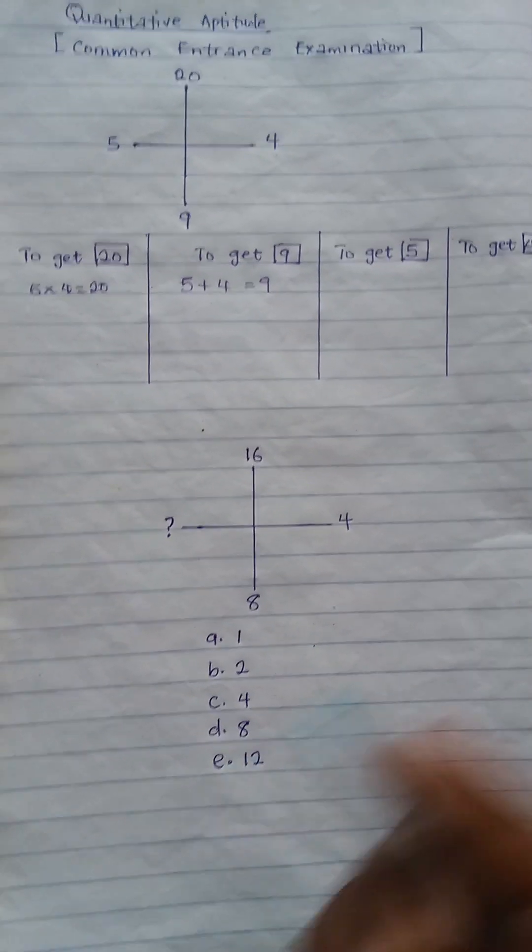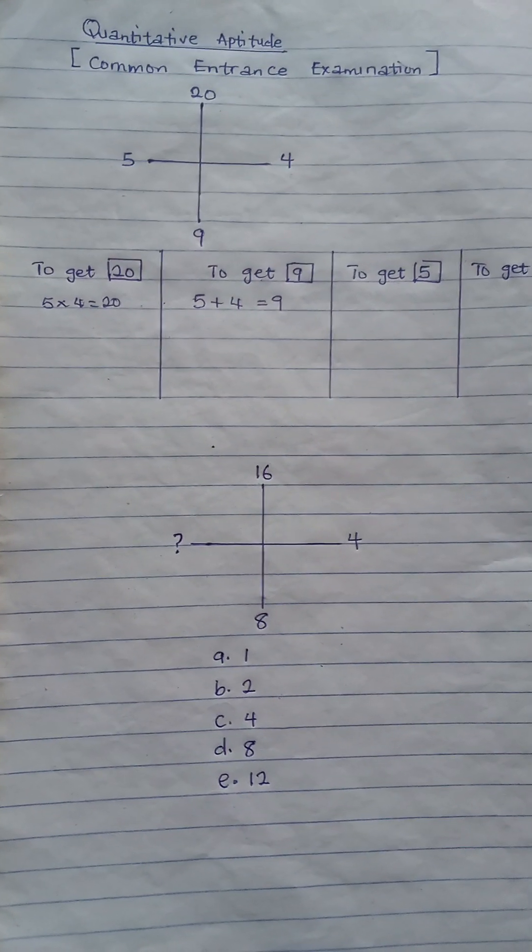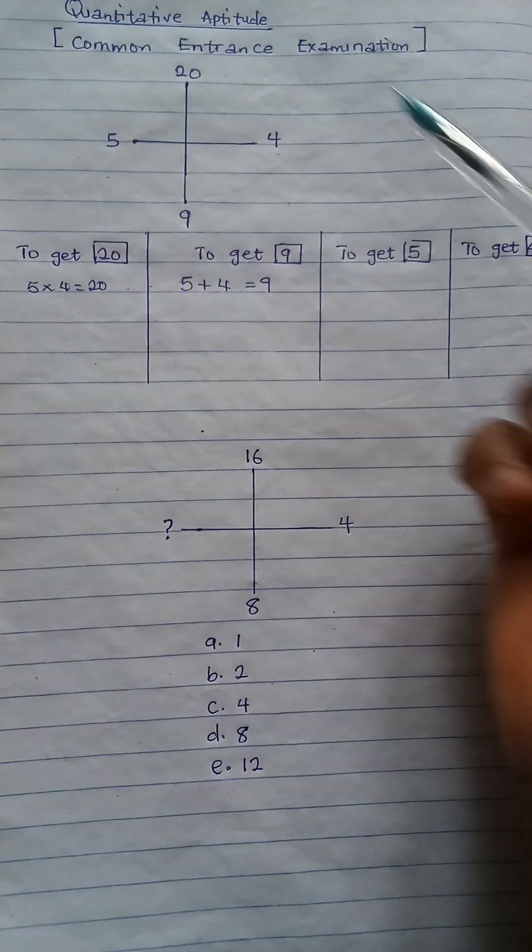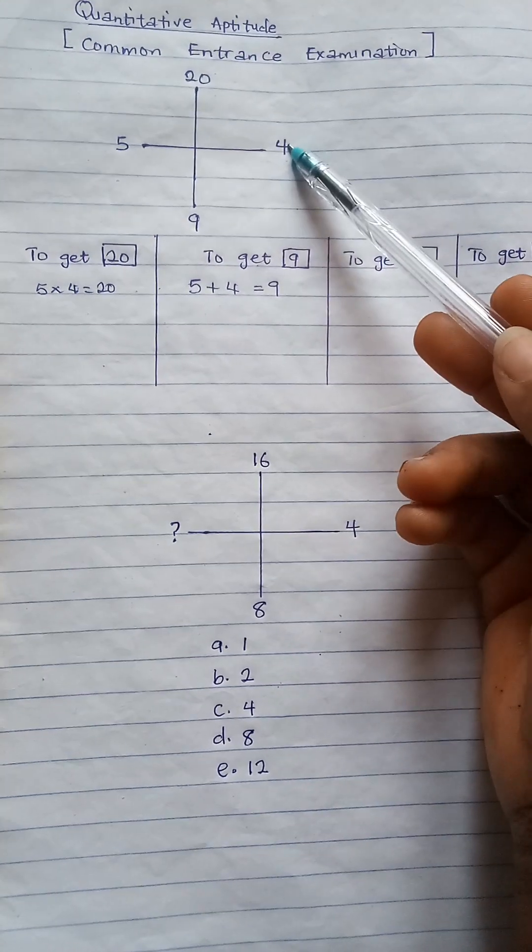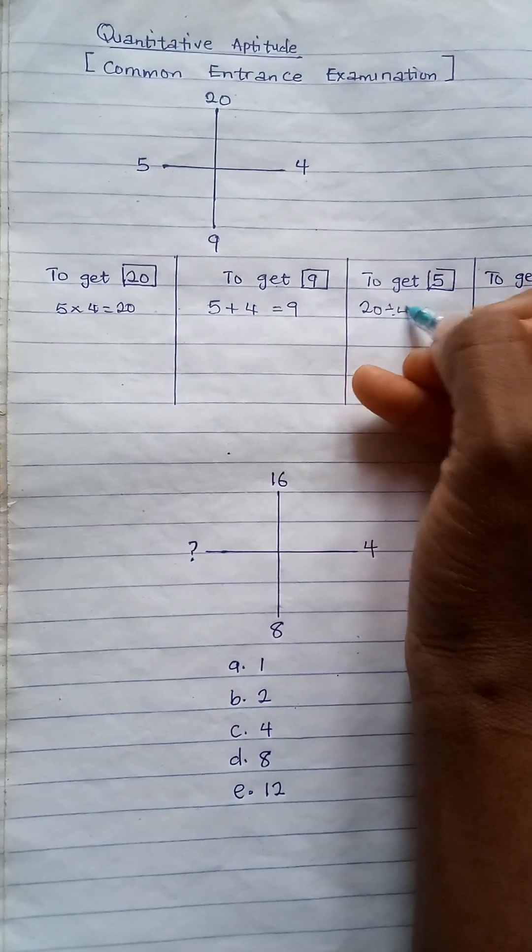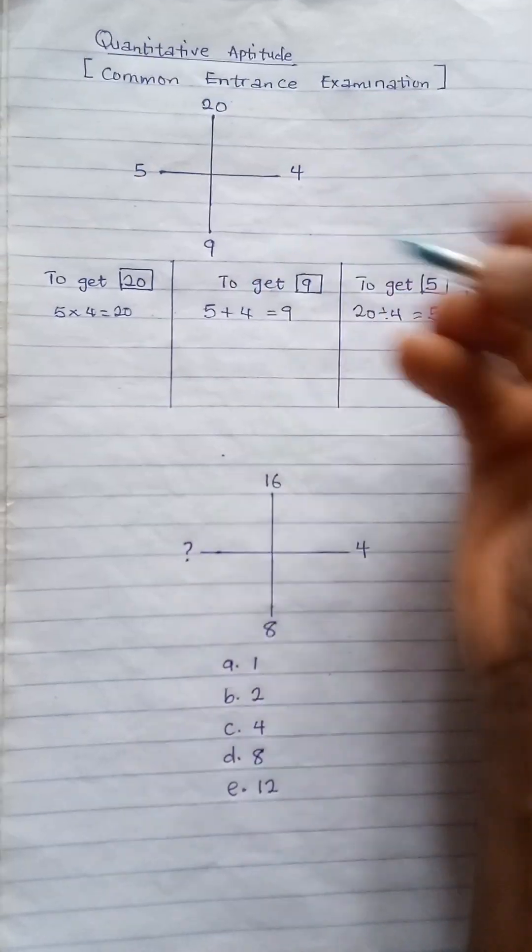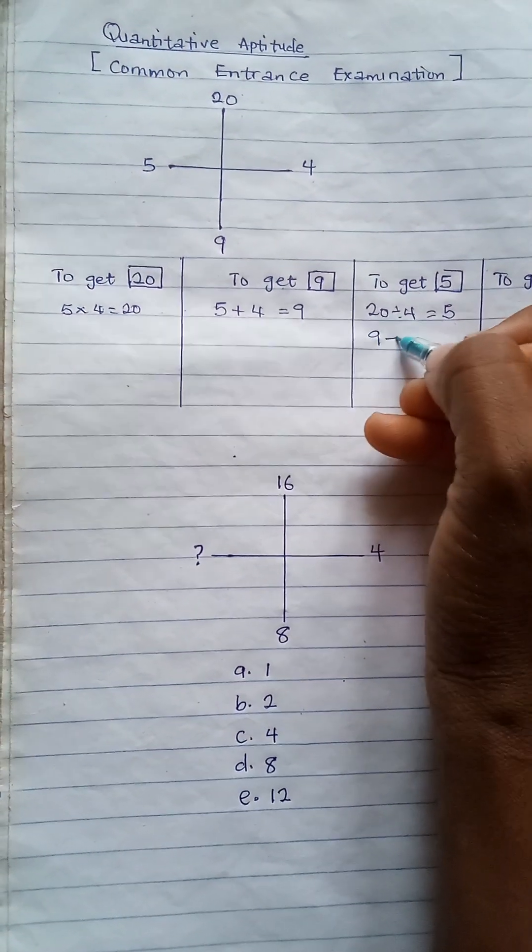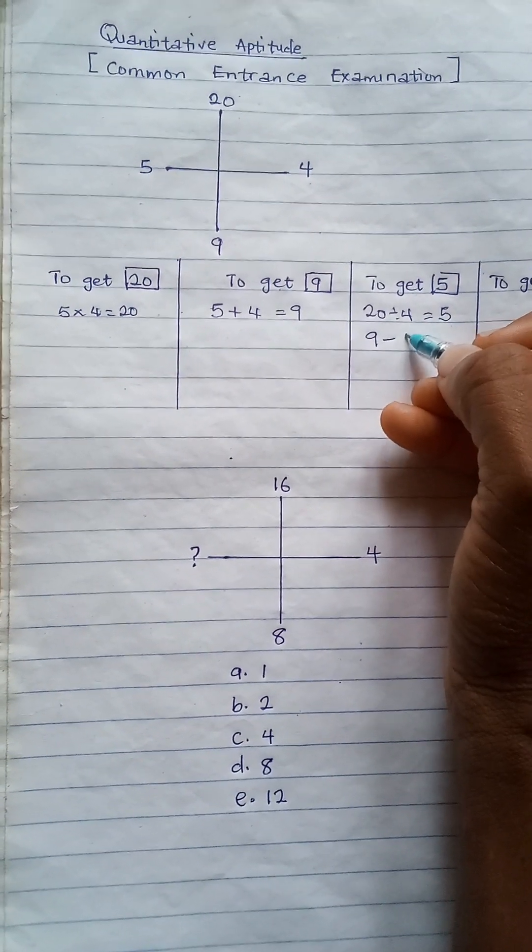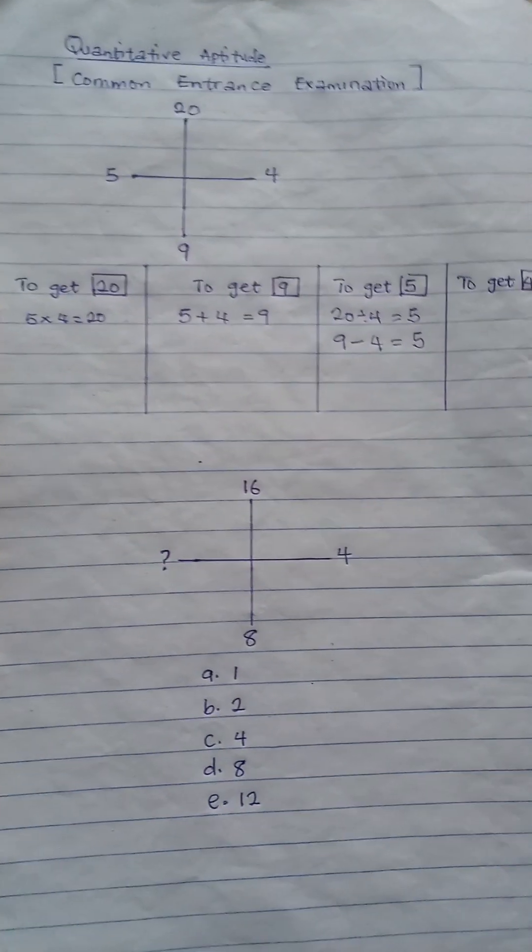Now for me to get 5, there are two ways you can go about that. You can either say 20 divided by 4 to give me 5, or I can simply say 9 minus 4 will give me 5. So these are the two ways I can get my 5.